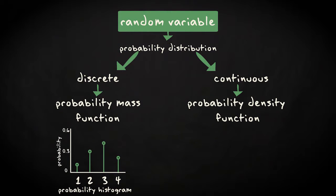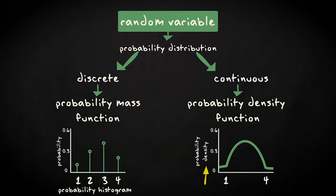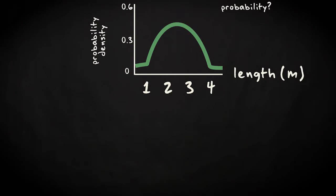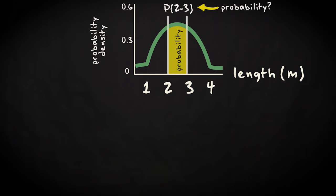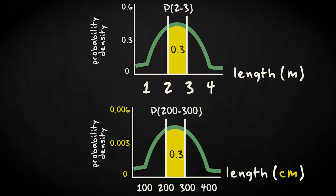An example of a continuous probability distribution for the random variable x could be this graph. This probability distribution does not give probability on the y-axis, but rather a unit that is called probability density — the probability per unit value of the x variable. To get the probability you need to consider a certain interval under the curve, rather than the height of the curve at a certain location. The probability is then given by the surface area. The consequence of having a probability density on the y-axis is that when units of the random variable change — for example, if you express a length not in meters but in centimeters — the values along the y-axis change accordingly. In the end, the surface area for the same interval should not change.